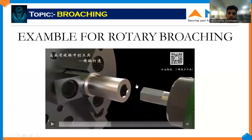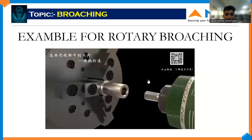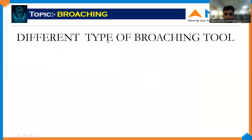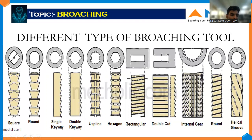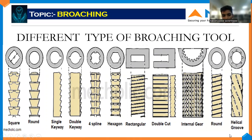For a 50% internal gear only we are using rotary broaching. There are different types of tools available: square broaching tool, round broaching tool, single keyway broaching tool, double keyway broaching tool, single force spline broaching tool, helix broaching tool, hexagonal broaching tool, rectangular broaching tool, double cut broaching tool, internal gear broaching tool, and helical broaching tool.